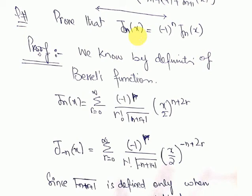From the question we need J(-n)(x), not Jn(x). So in the Bessel's function definition we replace n with -n everywhere: J(-n)(x) = summation r=0 to infinity of [(-1)^r / (r! · Γ(-n+r+1))] · (x/2)^(-n+2r).